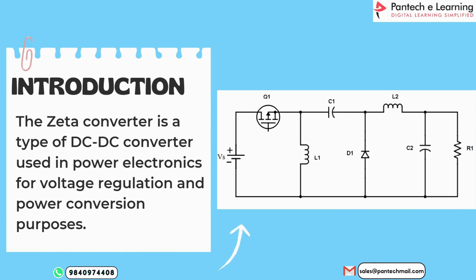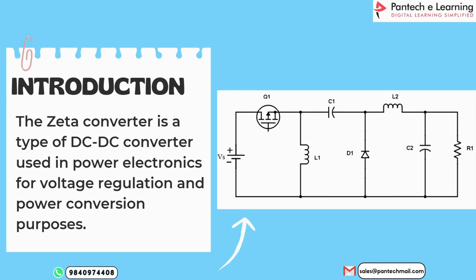Basically, the Zeta Converter is more beneficial than other types of converters. It has both the properties of Buck Converter and also Boost Converters, meaning it can act as both a Step Up and Step Down Converter. Also, this Zeta Converter has a non-inverting polarity type, meaning it gives a non-inverting output and it can be designed to achieve low ripple output current.